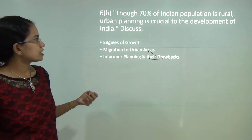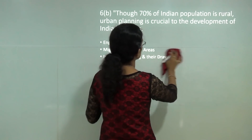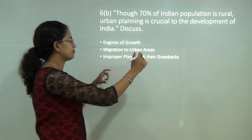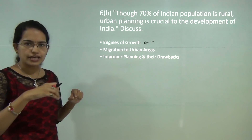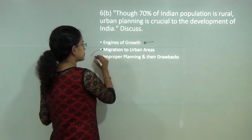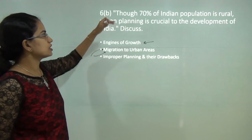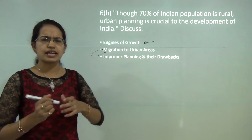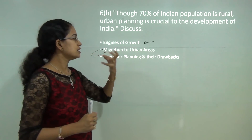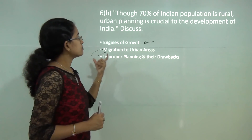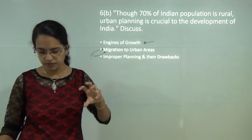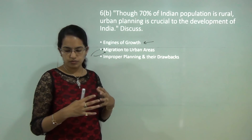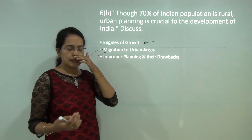The next question states: although 70 percent of the Indian population is rural, urban planning is crucial for India's development. To answer this, first explain why urban areas are engines of growth — they are pioneer centres for growth with significant rural-to-urban migration. Then explain that improper planning and restrictions due to political commitment or social causes hamper the planning process. Despite these drawbacks, urban centres remain the main focus for growth, offering an integrated approach involving natural systems and land management practices.